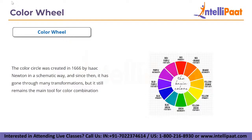Since then the color wheel has gone through many transformations but still remains the main tool for color combination. The main idea was that the color wheel must be made so that colors would be mixed appropriately. Following Newton's findings, the study of color advanced to cover the properties of color in its two forms — print or paint, and screen or light — across a variety of fields from art to astronomy.